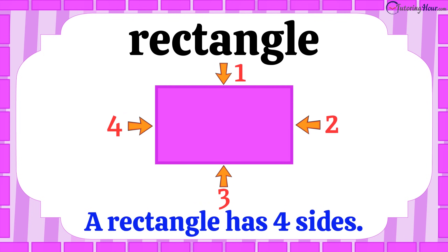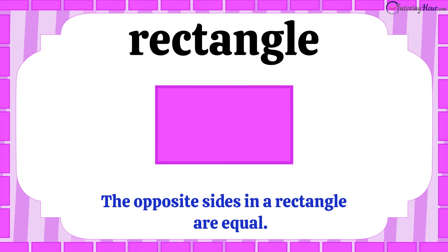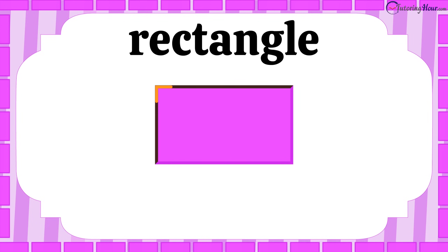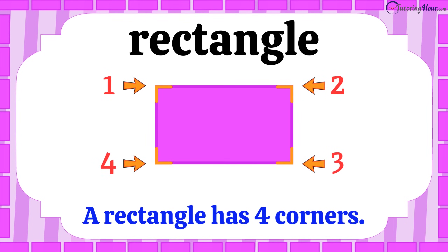Did you notice that the opposite sides in a rectangle are equal? These two opposite sides are equal, and these two opposite sides are also equal in length. Let's count the corners now: one, two, three, and four — four corners!